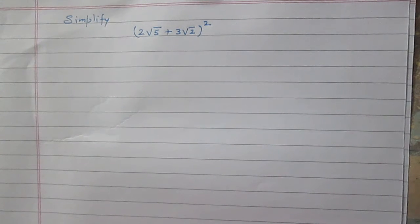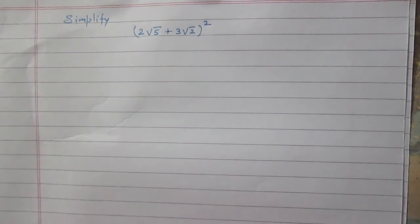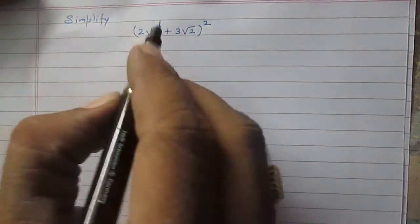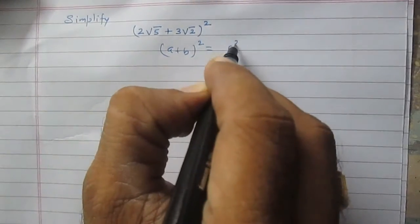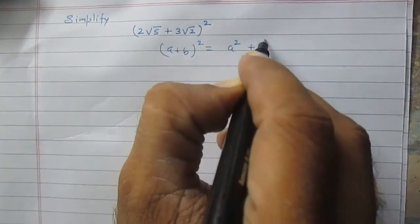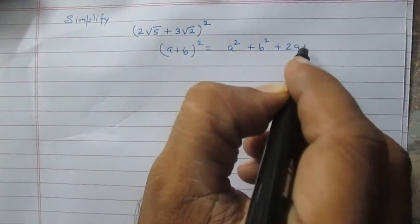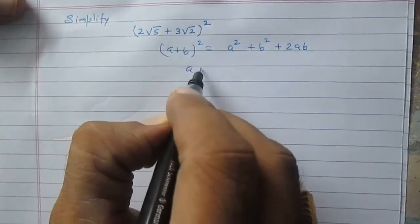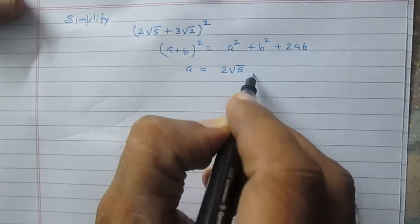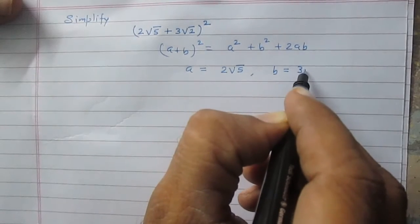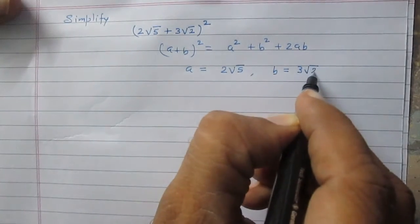Simplify 2 multiplied by square root 5 plus 3 multiplied by square root 2, whole square. Using the identity (a + b)² = a² + b² + 2ab, where a is equal to 2 times square root of 5 and b is equal to 3 times square root of 2.